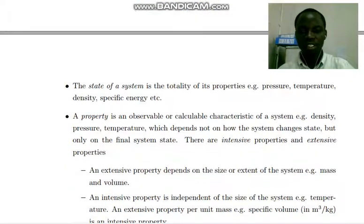The state of a system is the totality of its property like pressure, temperature, density, specific energy. While a property is an observable or calculable characteristic of a system like density, pressure, temperature, which depends not on how the system changes state, but only on the final system state.